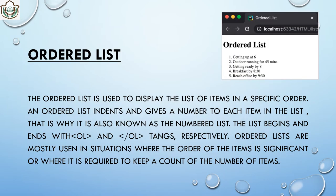Next is the ordered list. An ordered list is used to display list items in a specific order and gives a number to each item — that is why it is also known as a numbered list. You can display different items in a specific sequence: first thing comes first, then second, third, and so on. Another name for ordered list is numbered list.